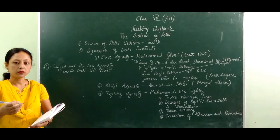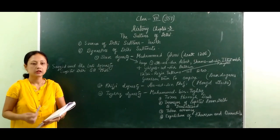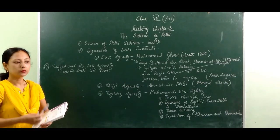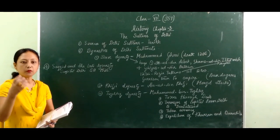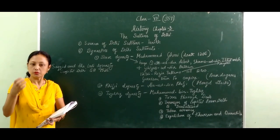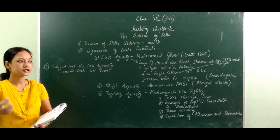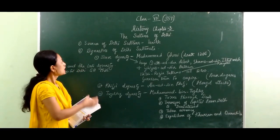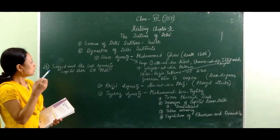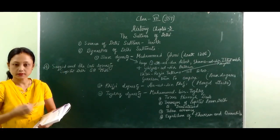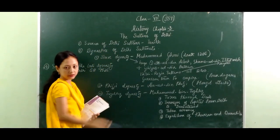First of all, we have to know who were the early rulers of Delhi. When we study about the sultans, we will find many dynasties. Dynasties are the groups of people who ruled Delhi from different times. Among these, we will be studying about the Delhi Sultanates. First of all, we have to know the sources of the Delhi Sultanate.